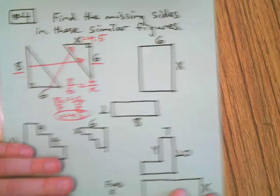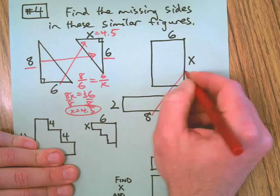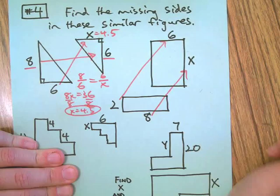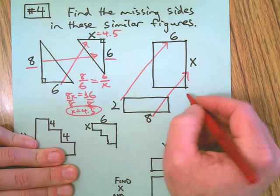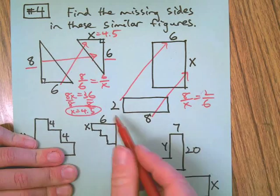Beautiful. Next, we can see that eight corresponds with X, two corresponds with six. So that's going to be our ratio that we write: eight over X equals two over six, keeping them in the same order.